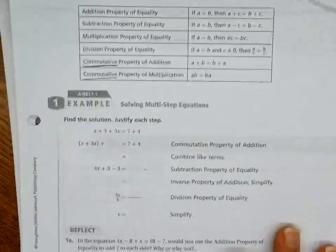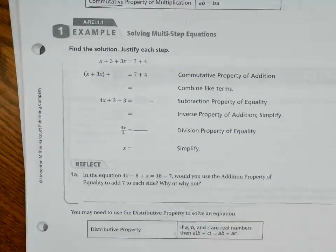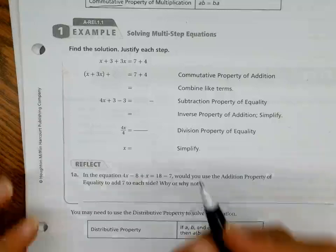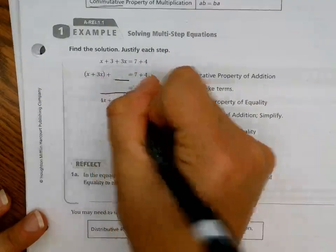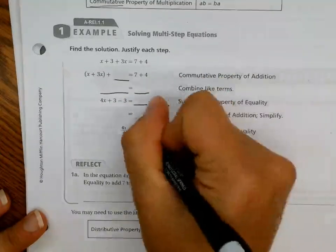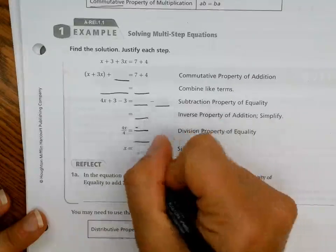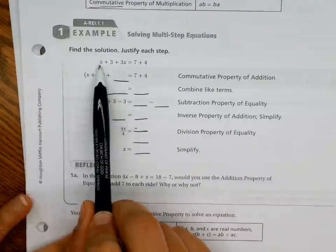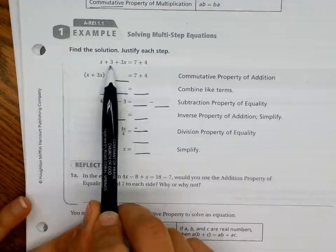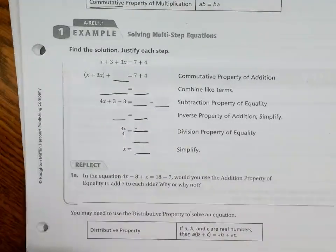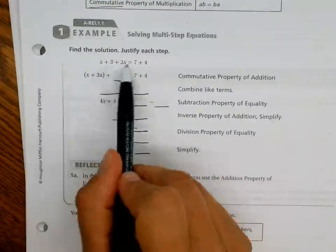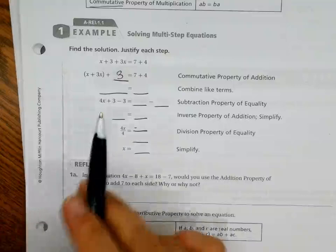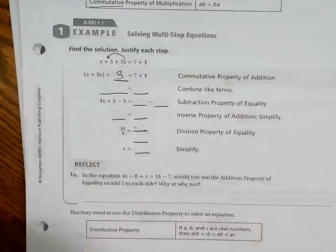Looking at our first example: find the solution, justify each step. X plus 3 plus 3X equals 7 plus 4. Looking from here to here, what happened? They took 3X and moved it over here, keeping the plus 3. So all they did is they took this and moved it over — that's the commutative property of addition. They wanted to be able to combine those like terms, and that's why they did that.